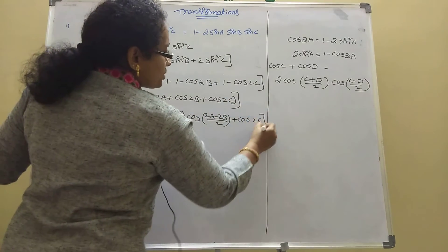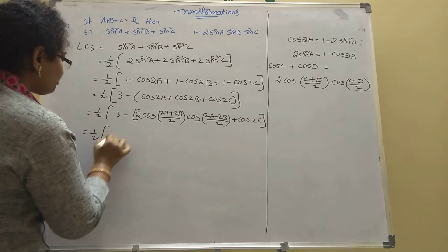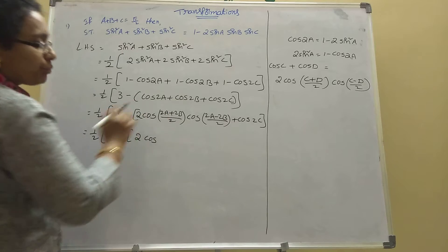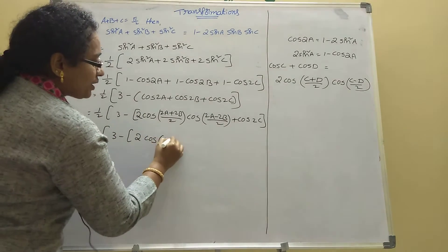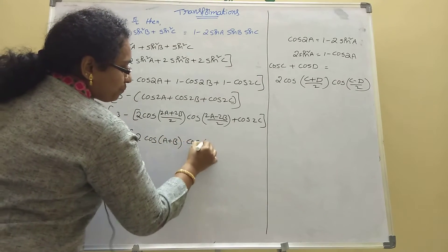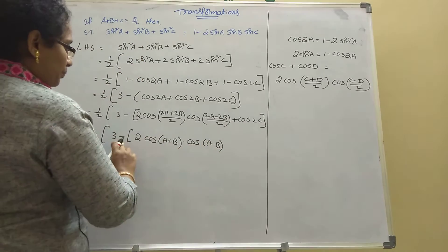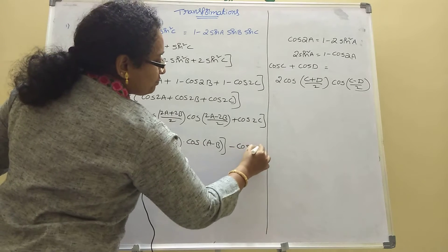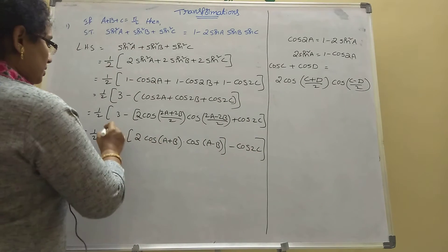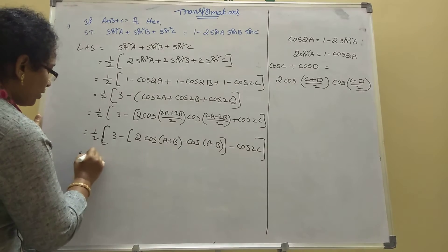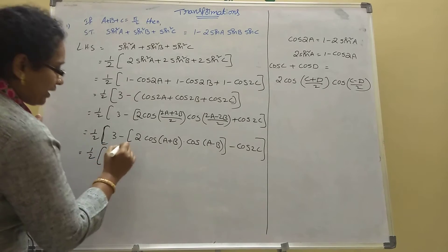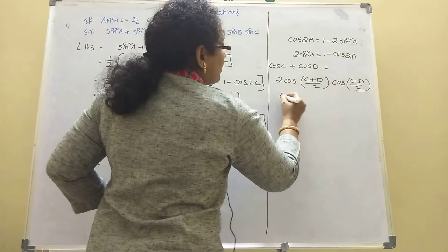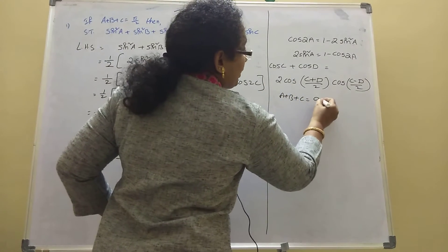So we have 1 by 2 times [3 minus (2 cos(A+B) cos(A-B) minus cos 2C)]. Now cos of A plus B: since A plus B plus C equals pi by 2, that is 90 degrees, we get A plus B equal to 90 minus C.